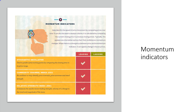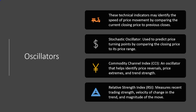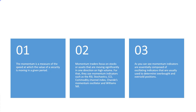Momentum indicators help identify the speed of price movement by comparing price over time and can also be used to analyze volume. It is calculated by comparing the current closing price to the previous closing price, typically appearing as a line below the price chart that oscillates as momentum changes. Two famous momentum indicators are Stochastics and RSI — both are leading indicators. Stochastics predicts price turning points by comparing the closing price to its range; RSI measures recent trading strength, velocity of change, and magnitude of the move.